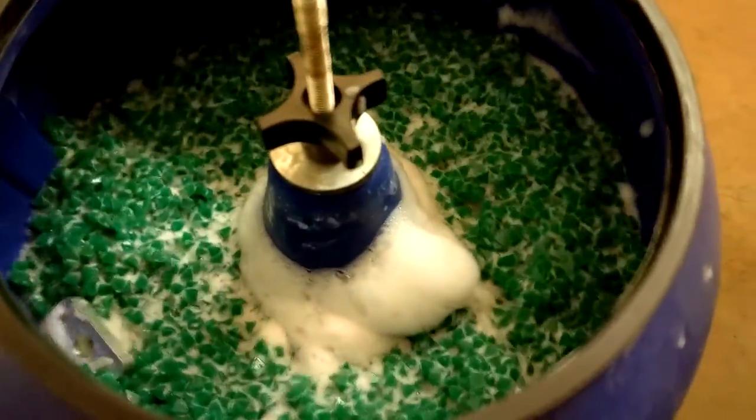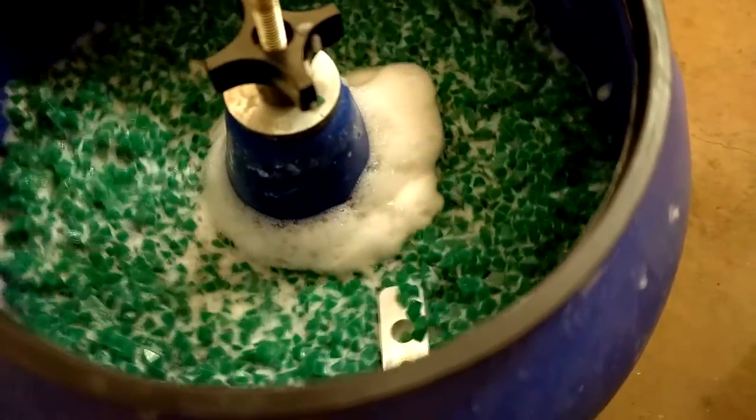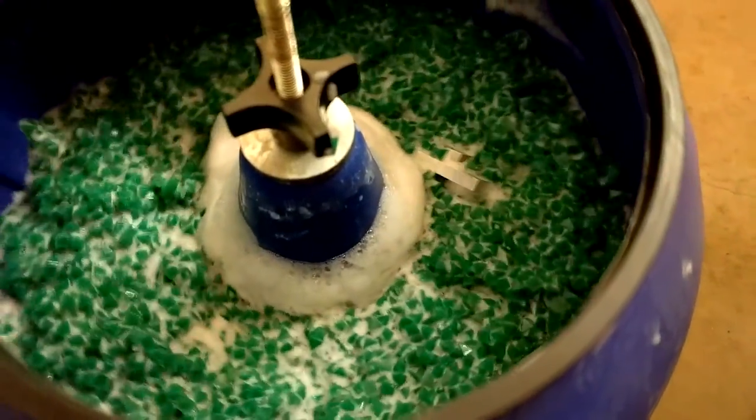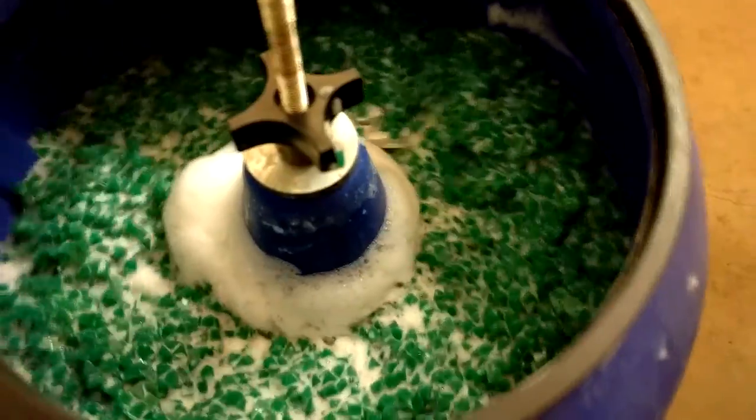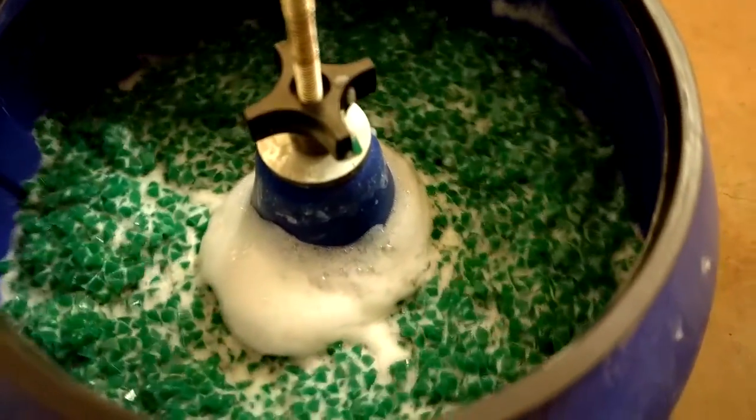I like to remove the machining marks using a vibratory tumbler. Add the media, a little bit of water, and some soap. Toss the parts in and let them run for a few hours. The process works well on aluminum. They come out dark, but a little bit of polish quickly brings back the shine.